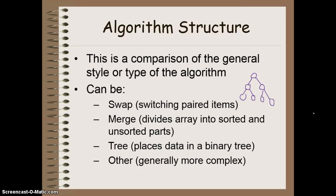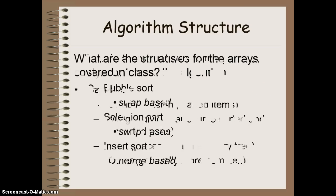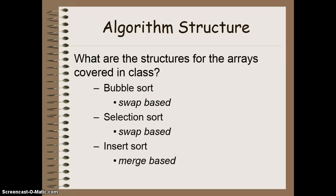If you were to go on into programming, you might find some other structures out there. The structures we've been working with: bubble sort is a swap-based sort because we're swapping individual elements as we bubble the largest element to the end of the array. Selection sort is also swap-based because we're going to find the lowest valued element and swap it with the element at the beginning of the array. Insert sort is an example of a merge-based sort where we were merging our unsorted elements into the sorted side.